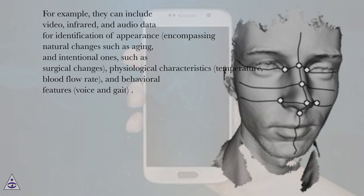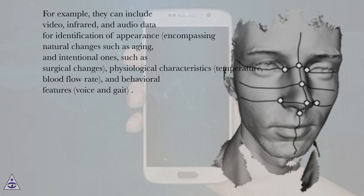For example, they can include video, infrared, and audio data for identification of appearance, encompassing natural changes such as aging, and intentional ones, such as surgical changes, physiological characteristics, temperature, blood flow rate, and behavioral features, voice and gait.